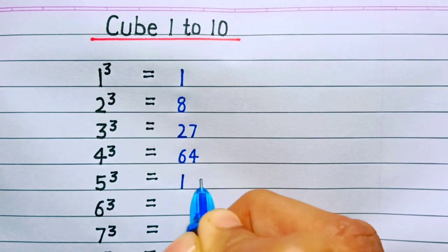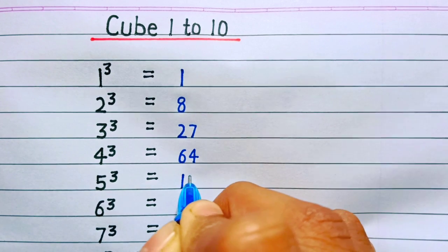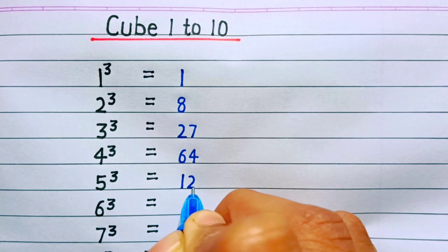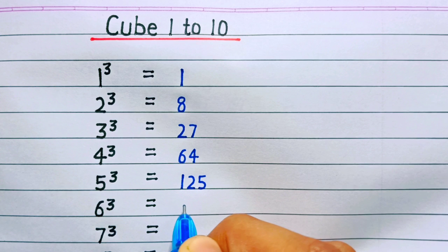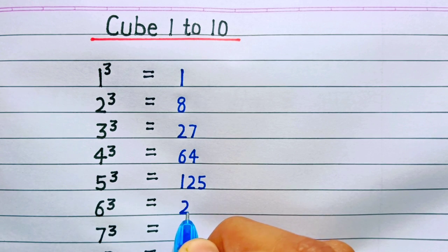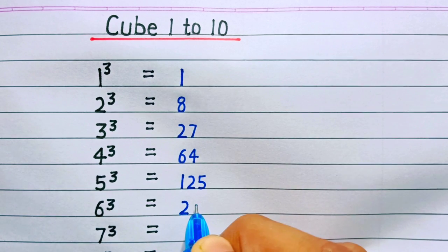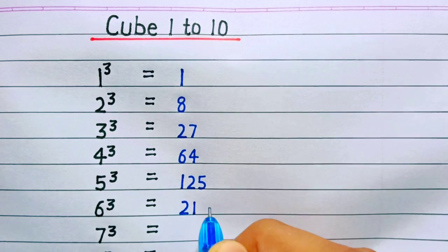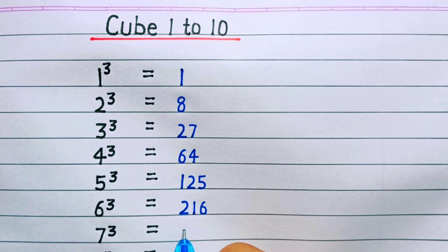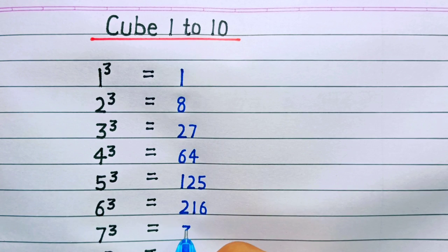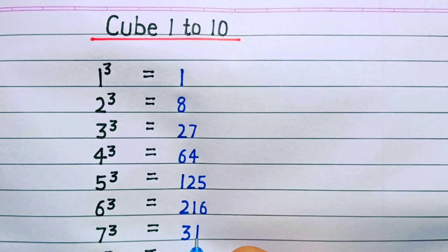Cube of 5 is 125, cube of 6 is 216, cube of 7 is 343.